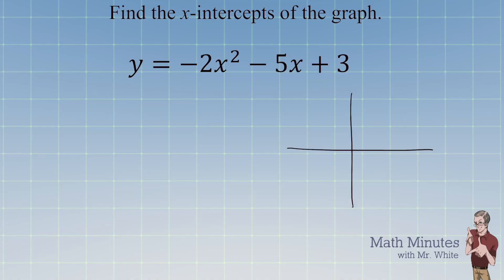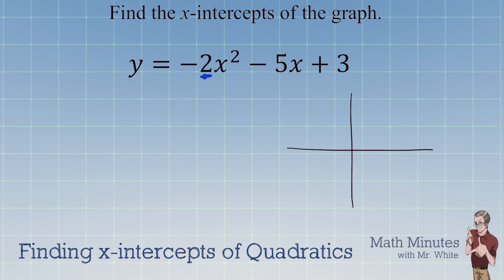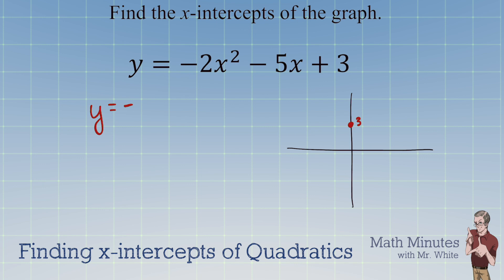One more example. Notice the leading coefficient is negative, which means this parabola will be concave down — it opens down like a frown. Also, the leading coefficient is not 1, so you can see how that works. This graph goes through 3 on the y-axis since that's the y-intercept. The first step is to factor, and I'm going to remove the minus sign to make it easier, giving us positive 2x squared plus 5x minus 3.